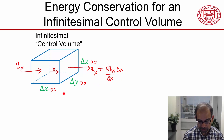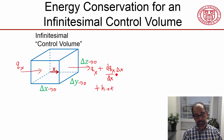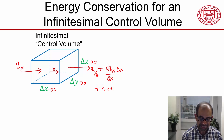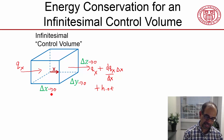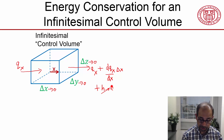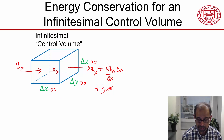You're going to get higher order terms that are proportional to delta x squared, delta x cubed, and so on. But in the limit as delta x tends to zero, I can ignore those higher order terms — that's why this is important.